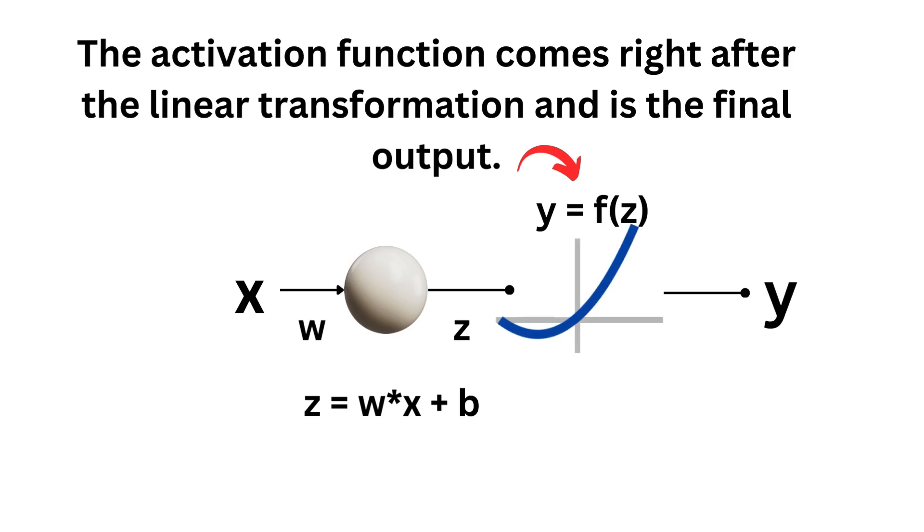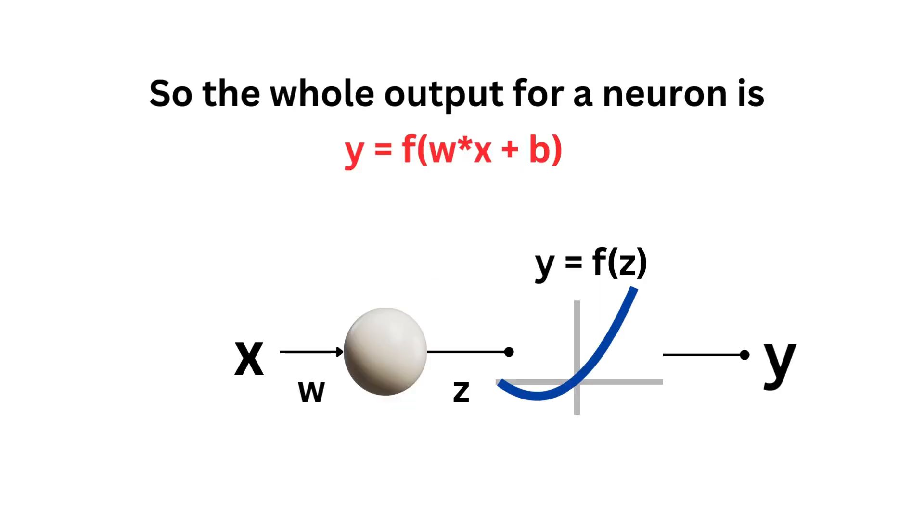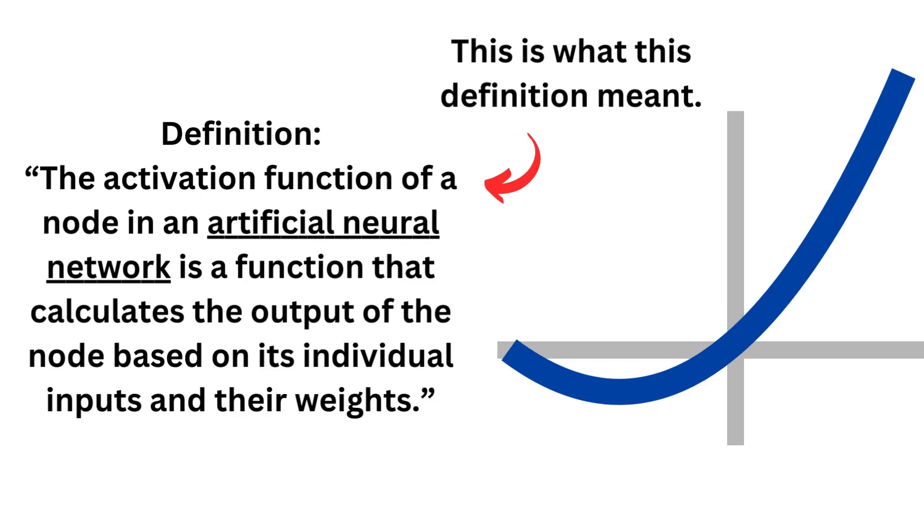The activation function comes right after the linear transformation and is the final output. So the whole output for a neuron is the formula y equals the function w times x plus b, where b is the bias. This is what in a nutshell this definition meant. Pretty simple.